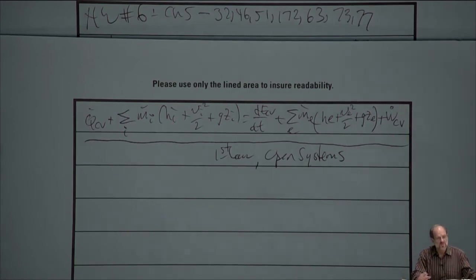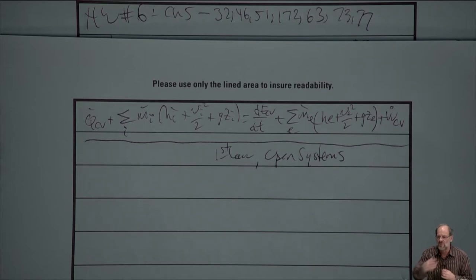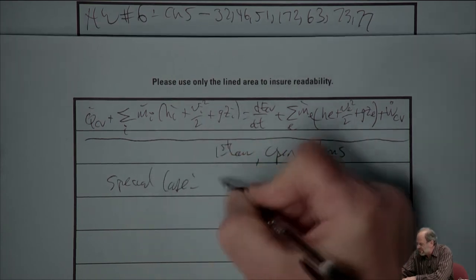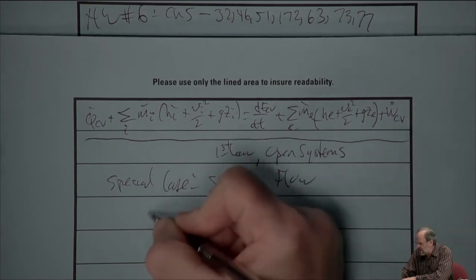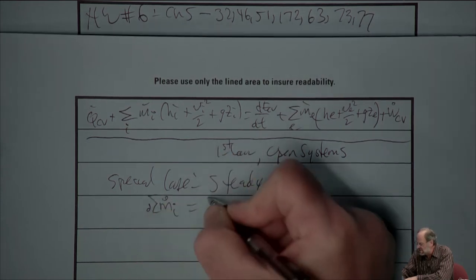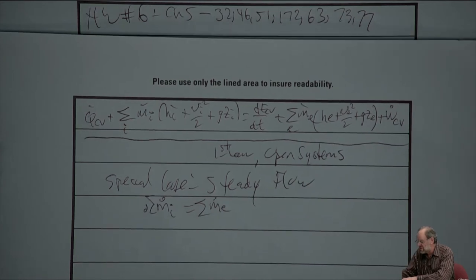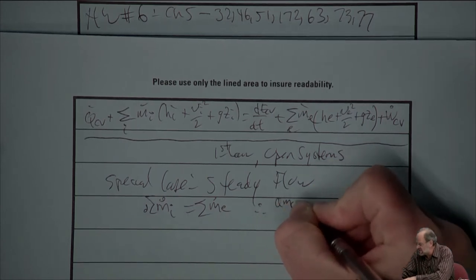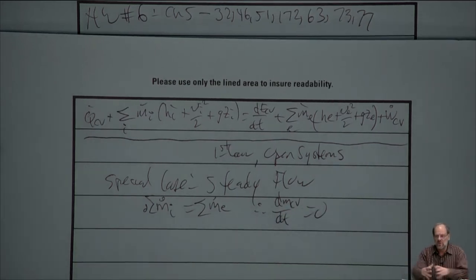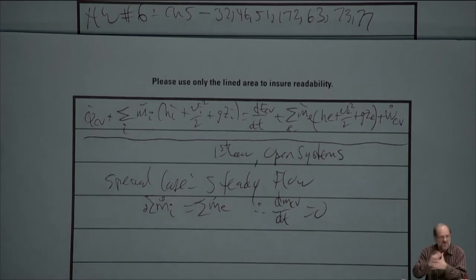What I want to do now is move on to one of our most important special cases, which is the case of steady flow — a special case we talked about briefly with regard to the continuity equation a week ago. Steady flow basically means that the rate mass flows in is going to equal the rate that mass flows out. Implied in this is that there's no change in mass within the control volume — otherwise our piece of mechanical equipment might just blow up on us, or implode.